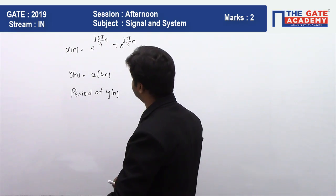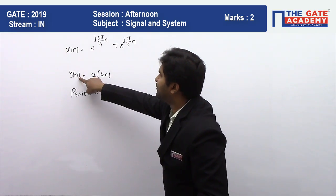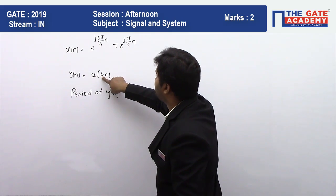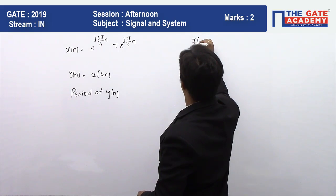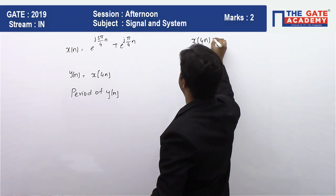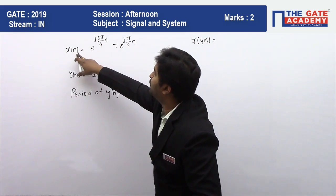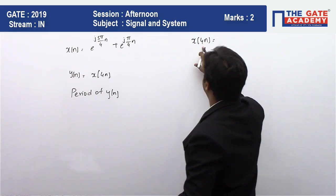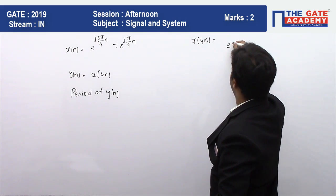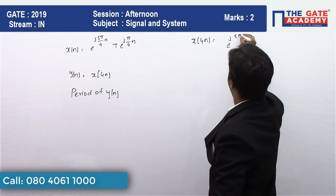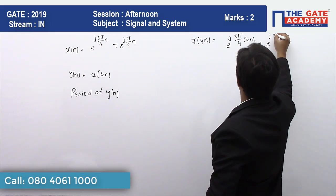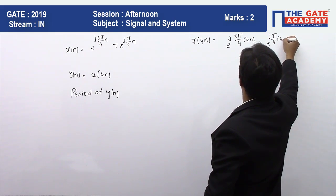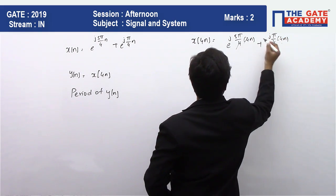It's a very simple question. We know y(n) is nothing but x(4n), so let me put the value of 4n over here. Let me replace the value of n to be equal to 4n. So if I put 4n here, this is going to be x(4n), which is going to be equal to e^(j5π/4 × 4n) plus e^(jπ/4 × 4n). So 4 gets cancelled out.